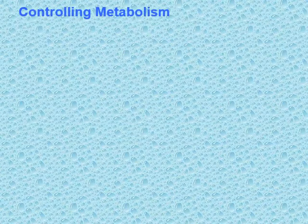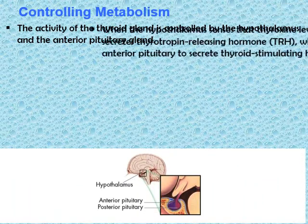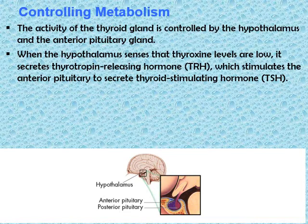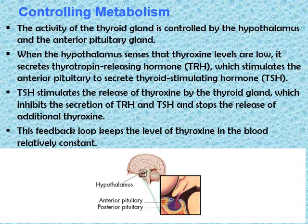The second example of control of the endocrine system is controlling metabolism. The activity of the thyroid gland is controlled by the hypothalamus and the anterior pituitary gland. When the hypothalamus senses that thyroxine levels are low, it secretes thyrotropin-releasing hormone (TRH), which stimulates the anterior pituitary to secrete thyroid-stimulating hormone (TSH). TSH then stimulates the release of thyroxine by the thyroid gland, which inhibits the secretion of TRH and TSH and stops the release of additional thyroxine. This feedback loop keeps thyroxine levels in the blood relatively constant.